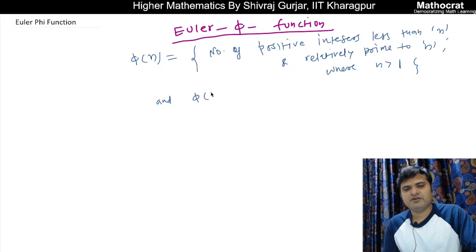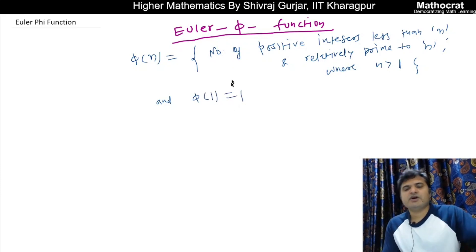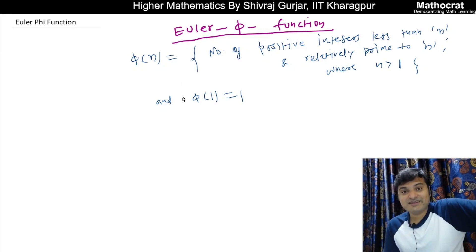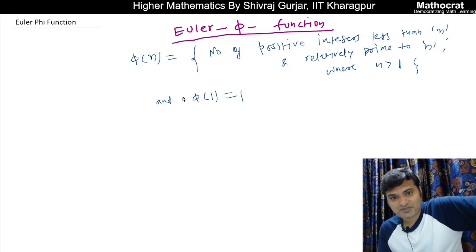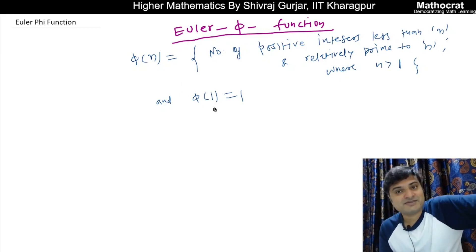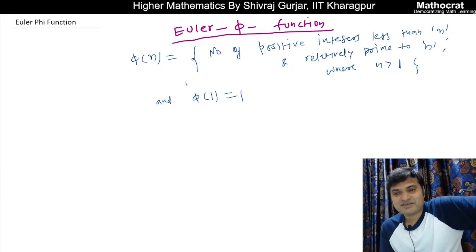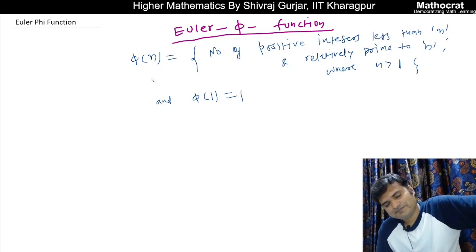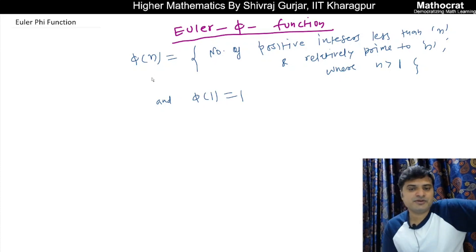And φ(1) equals 1. So the Euler Phi function is basically a counting number — φ(n) means the count of all positive integers which are relatively prime to n.